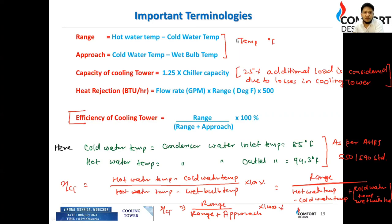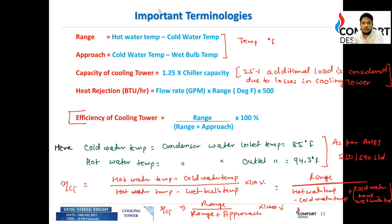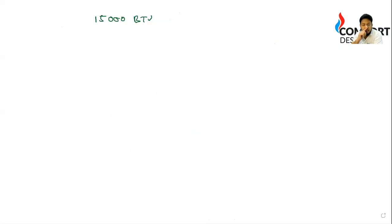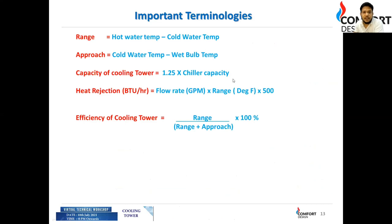There is a query about how the multiplication factor of 500 is derived. In a cooling tower, heat rejection for 1 TR is 15,000 BTU per hour. I will explain how the 500 is derived and then we'll move ahead with a case study — each and everything will be clear from that. Please join from the next link given in the group and we'll continue from there.